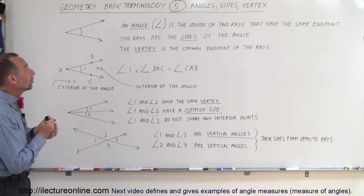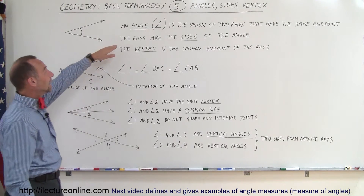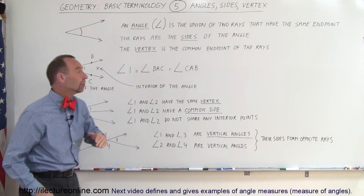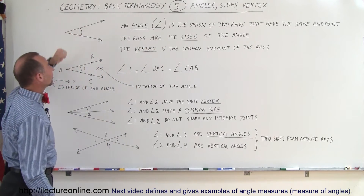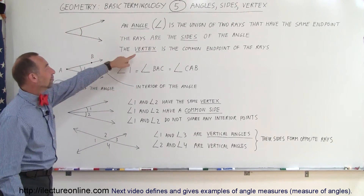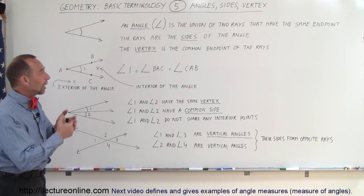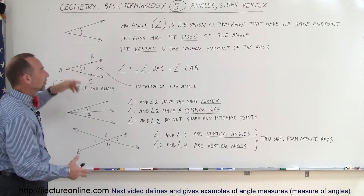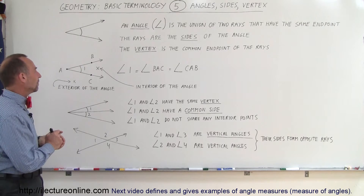What else can we say about these? The rays are the sides of the angle. So the rays form the sides of the angle, and the common end point is then called the vertex. That's how we define an angle in geometry.